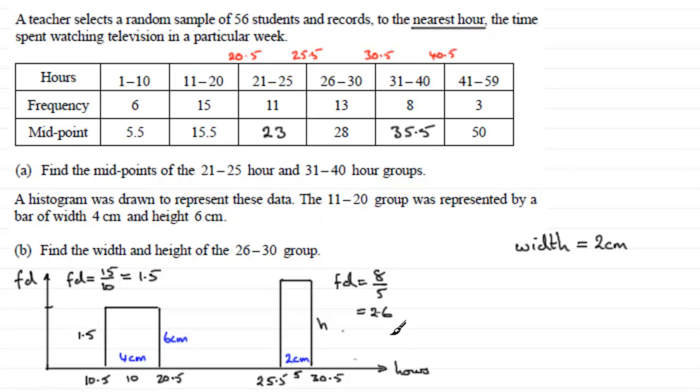So all I need to do now is just make a comparison equation. I can say that this height here compares to the 6 centimeters. And this frequency density of 2.6 compares with the 1.5. They've got to be in the same ratio. So I could say that H compared with the 6 is exactly the same as comparing the 2.6, the frequency density here, with the frequency density over there, 1.5.